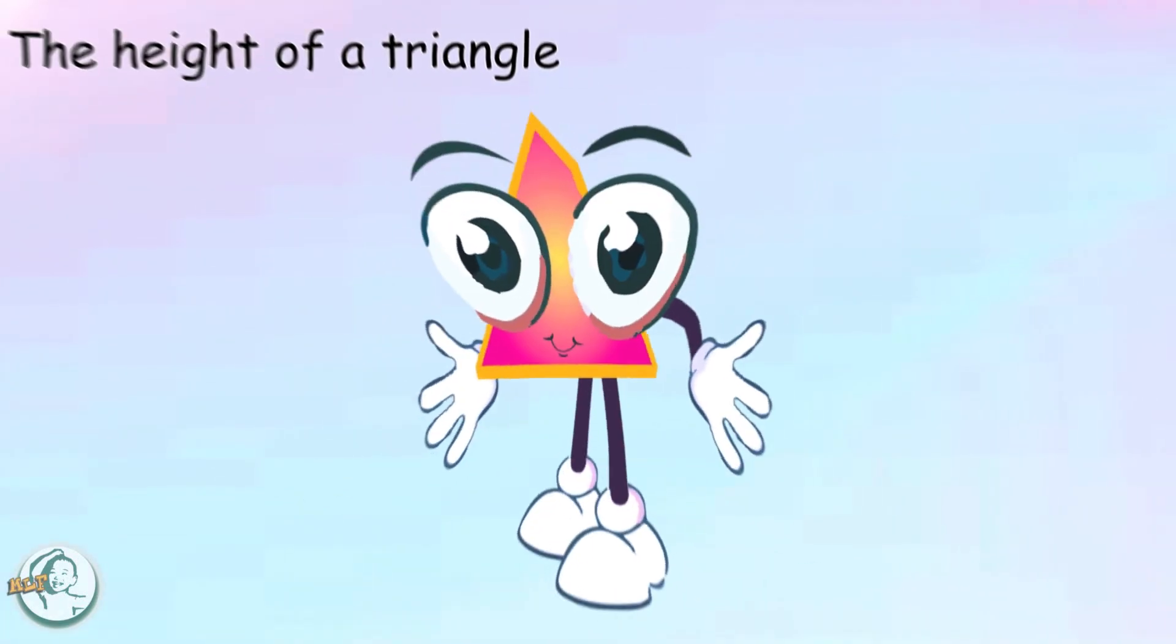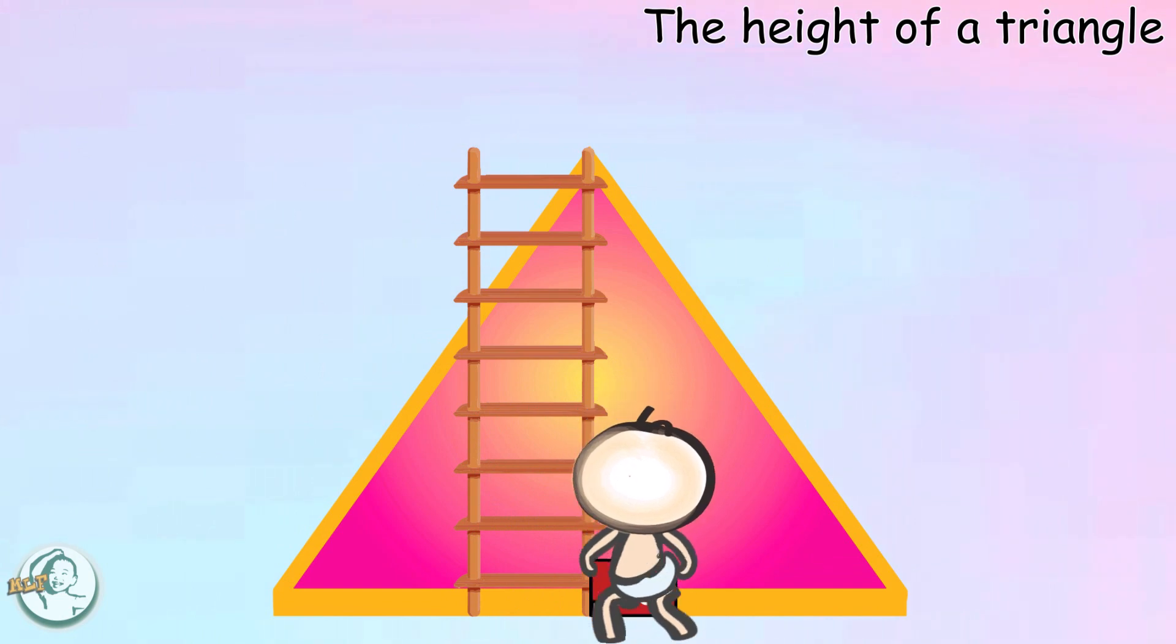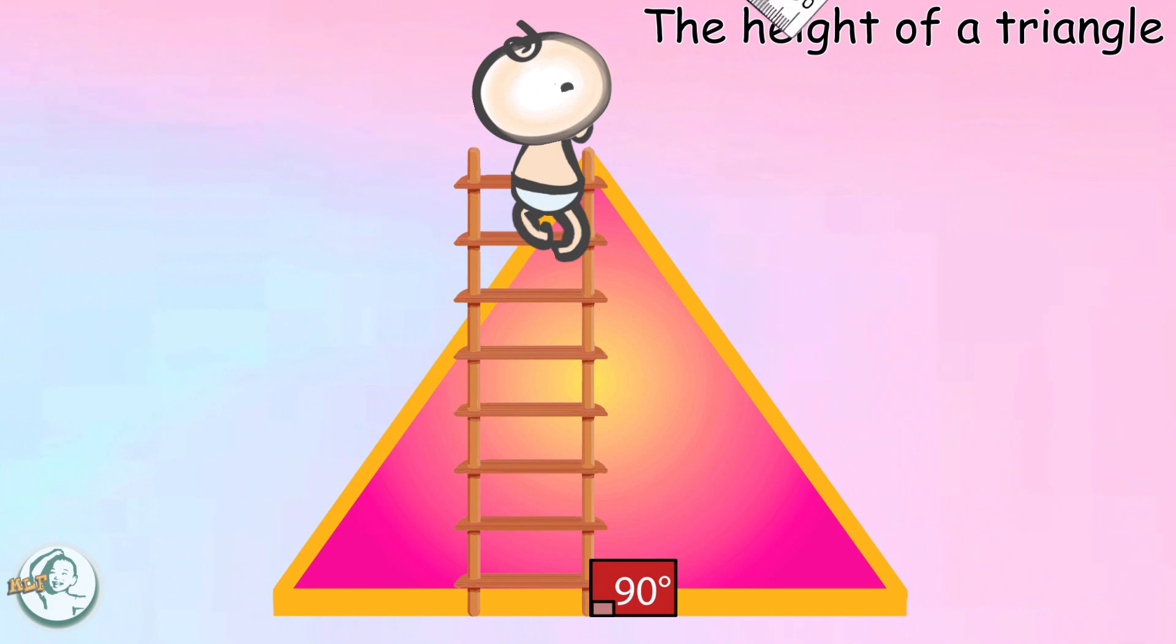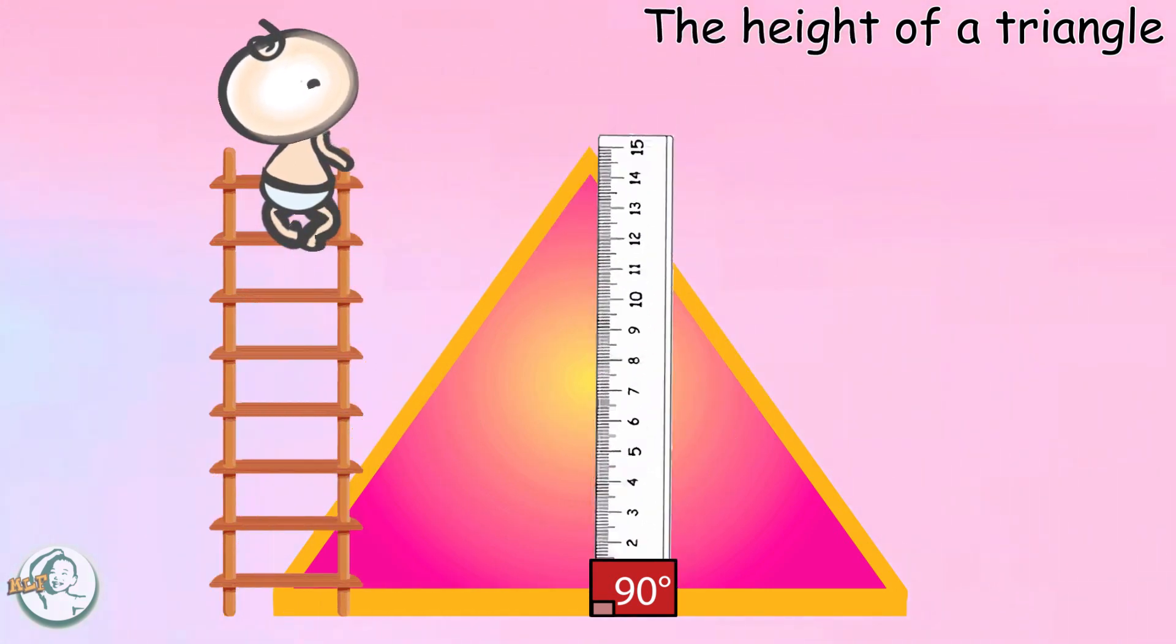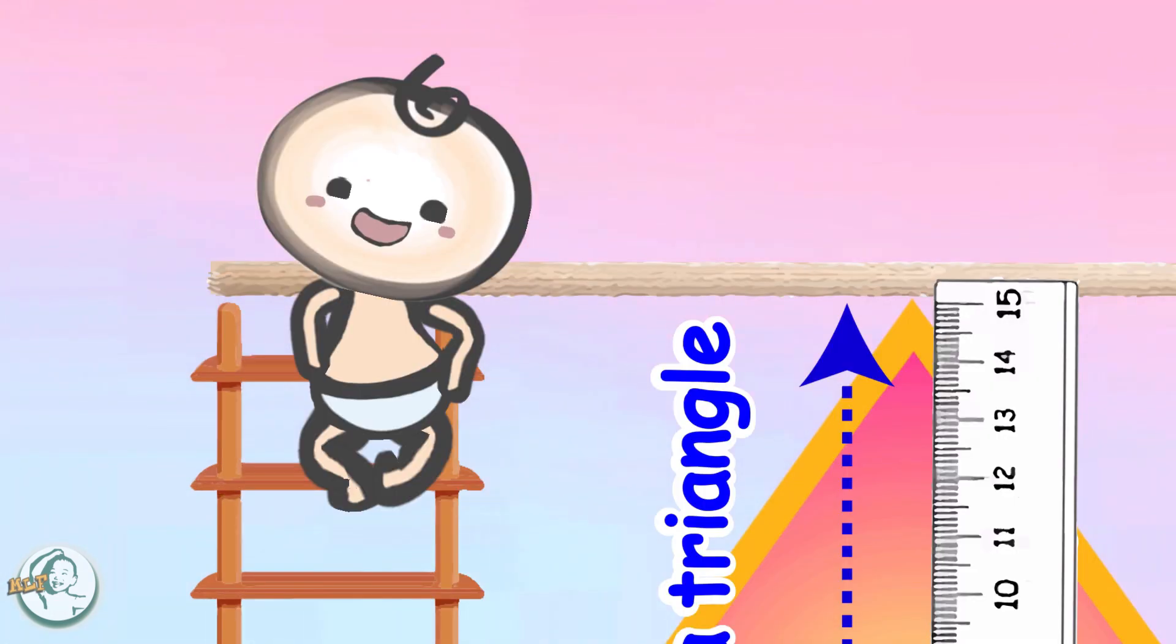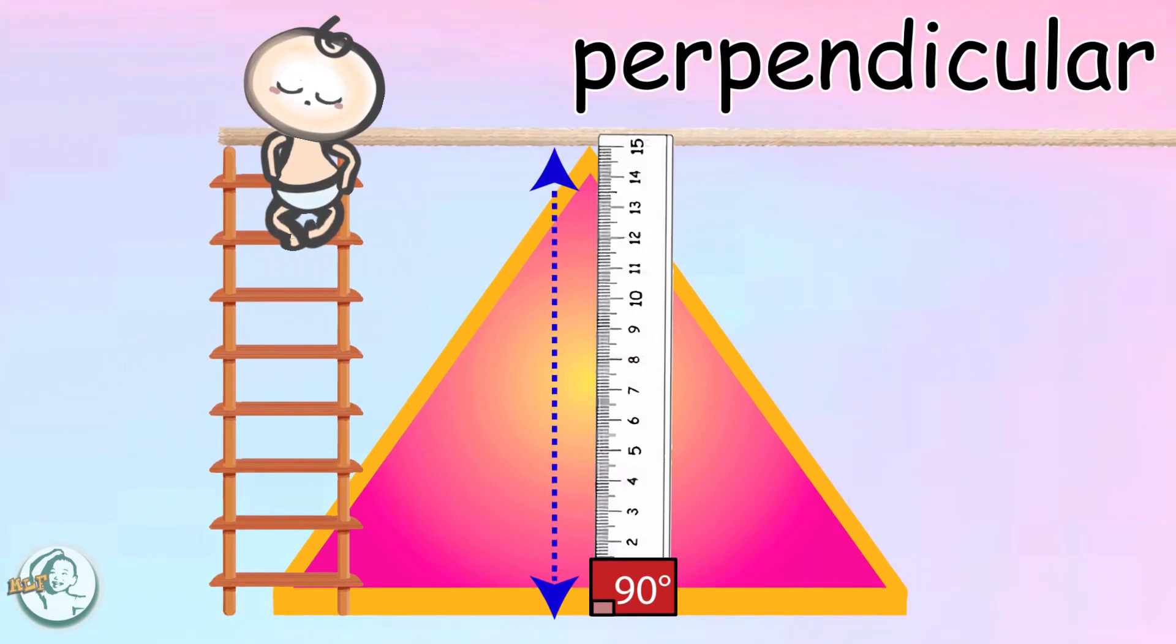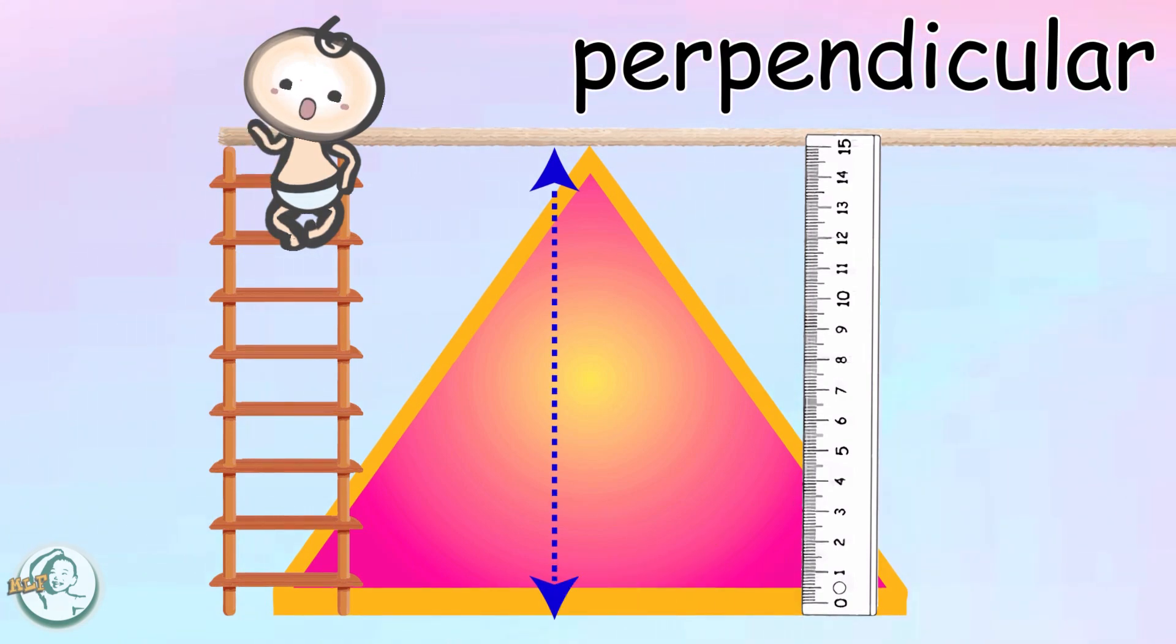The height of a triangle is the perpendicular distance from the base to the opposite vertex. What's the perpendicular? Oh, it means that it's at a 90 degree angle to the base. Oh, I get it now.